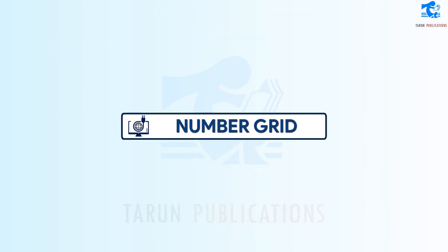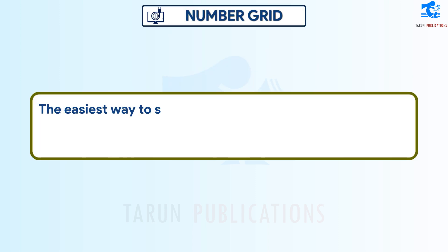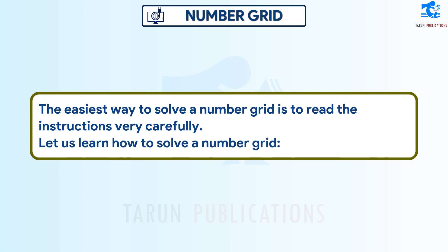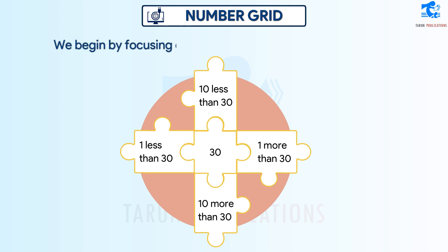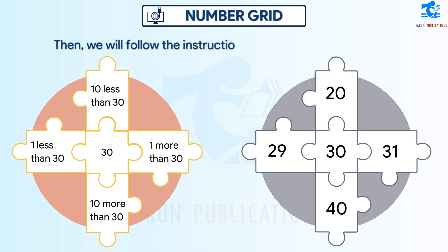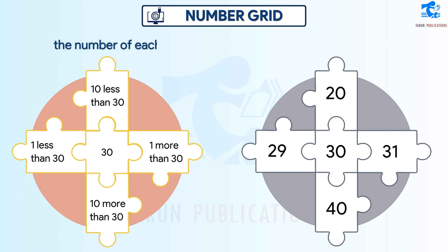Number Grid. The easiest way to solve a number grid is to read the instructions very carefully. We begin by focusing on the number given in the middle of the grid — for example, 30. Then we follow the instructions in the adjoining grids to find the number of each grid.